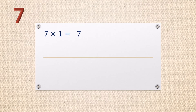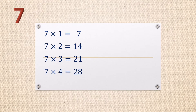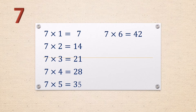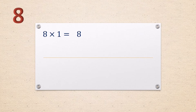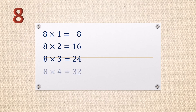Seven: chit. chit it chit, chit di chap si, chit sa di it, chit si di puwe, chit go sam go, chit lak si di, chit chit si kau, chit puwe di chap lak.